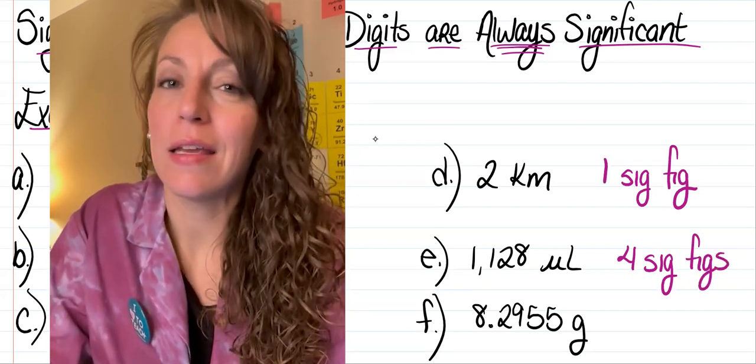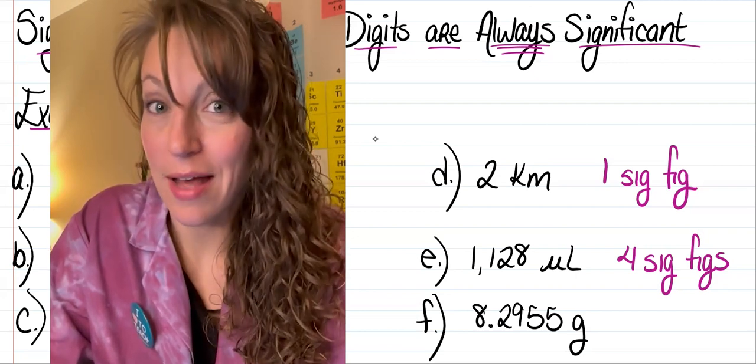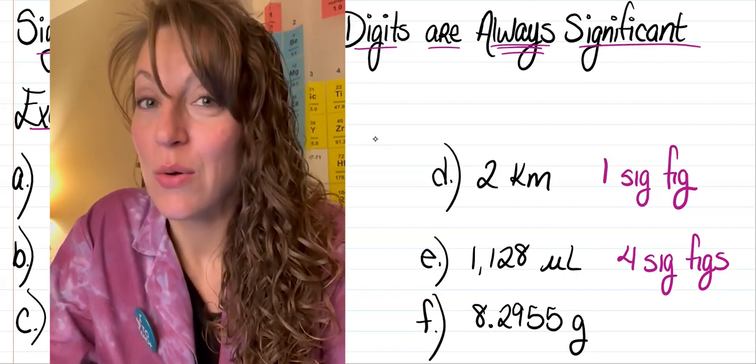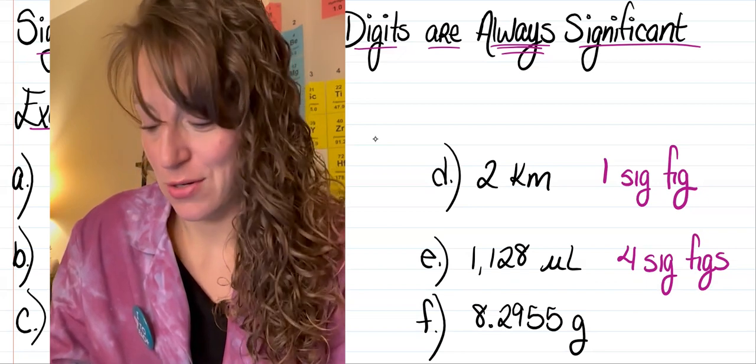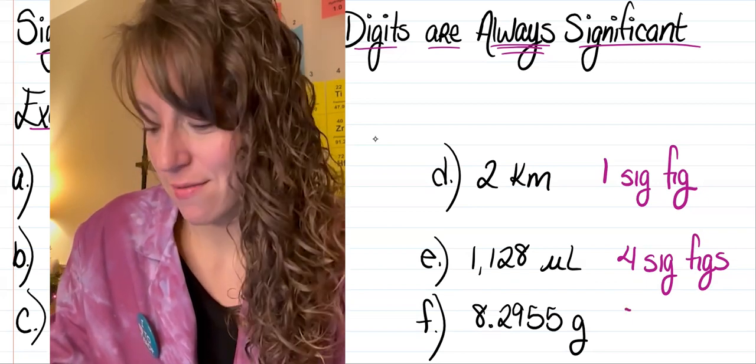And finally, in letter F, I've got 8.2955 grams, which gives me a total of one, two, three, four, five sig figs.